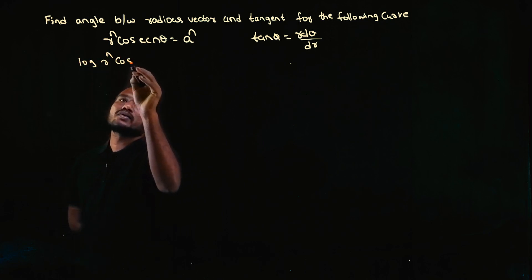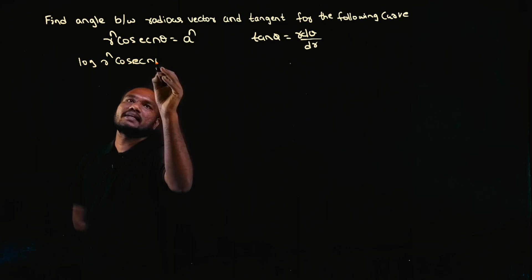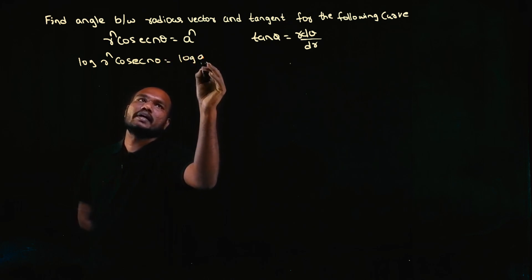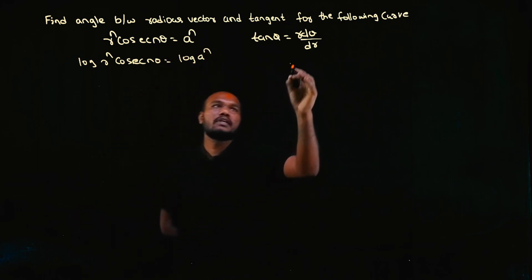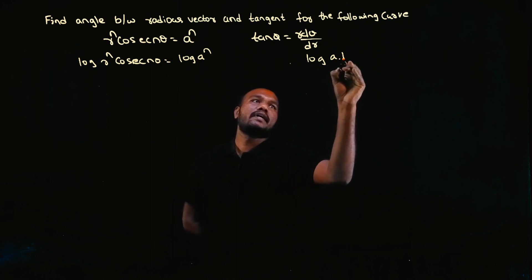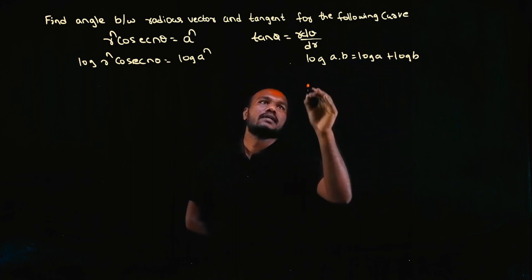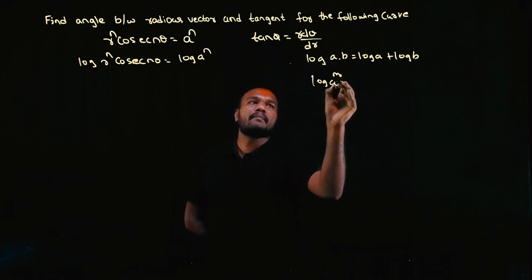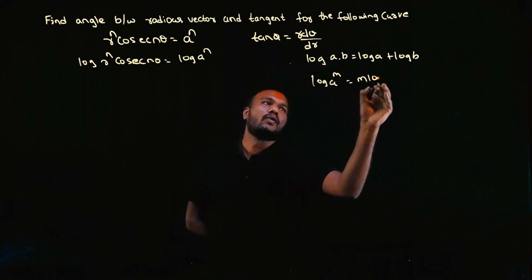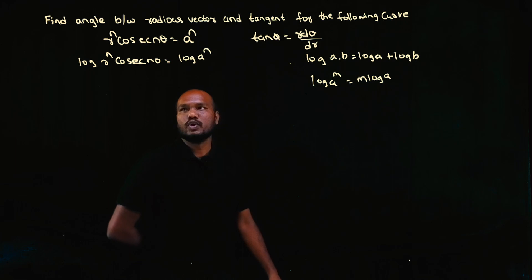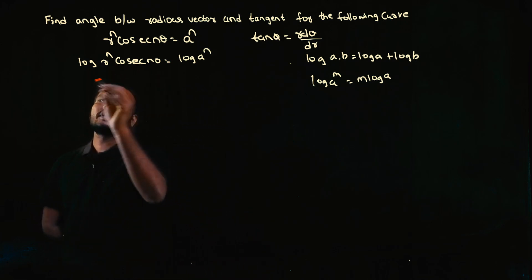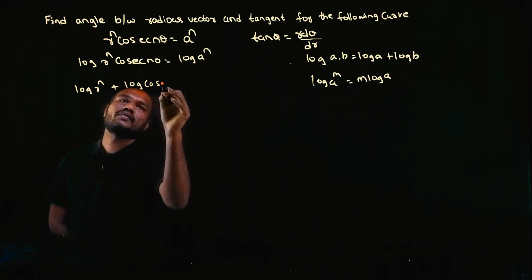We have log(r^n × cosec(nθ)) = log(a^n). What are the formulas we need to know? log(a×b) = log(a) + log(b), and log(a^m) = m×log(a). Let's apply this: log(a×b) = log(a) + log(b).